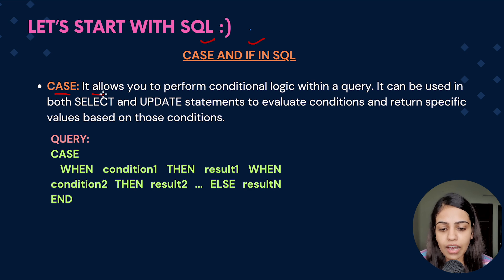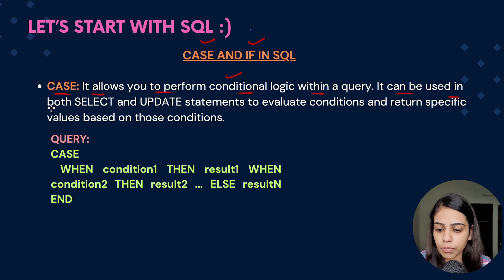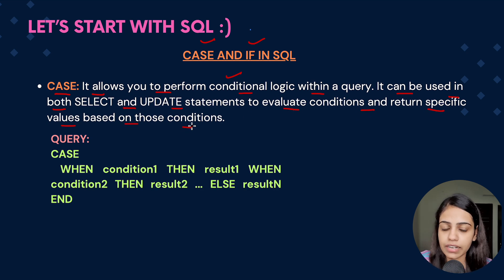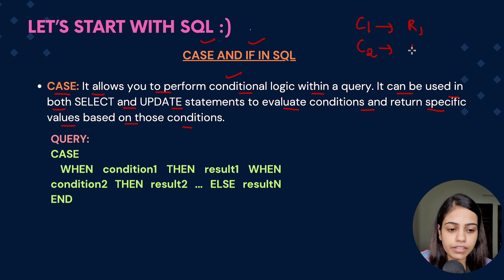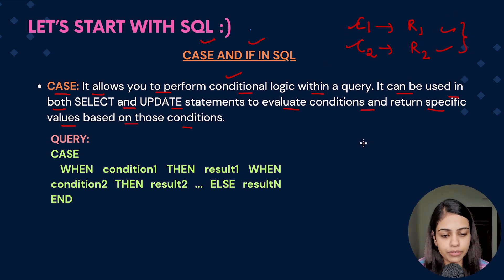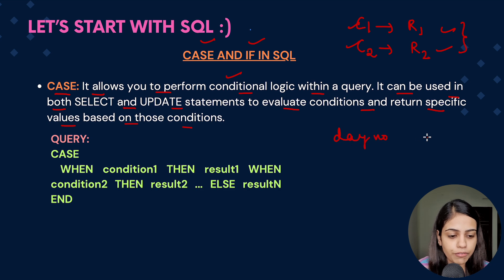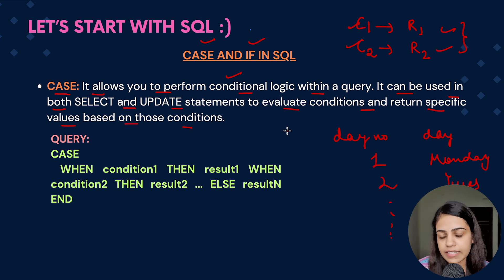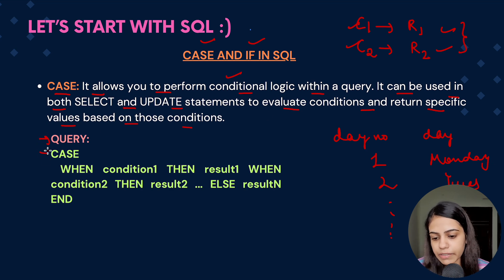CASE allows you to perform conditional logic within a query. It can be used with both SELECT as well as UPDATE statements to evaluate a condition and return specific values based on those conditions. For example, consider that on the basis of a day number you have to print the day — if day number is 1 print Monday, if day number is 2 print Tuesday, and so on.